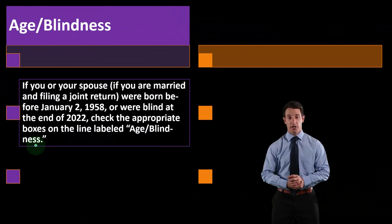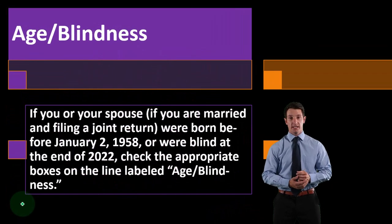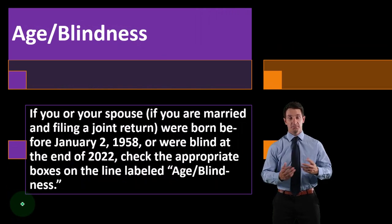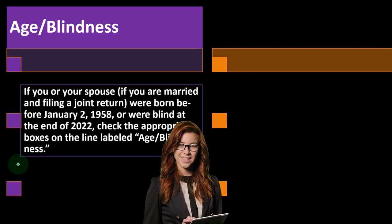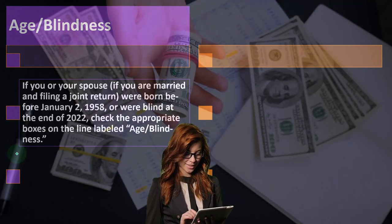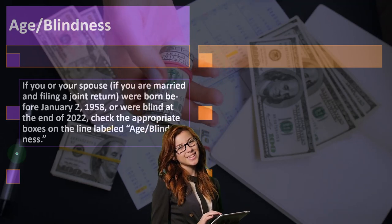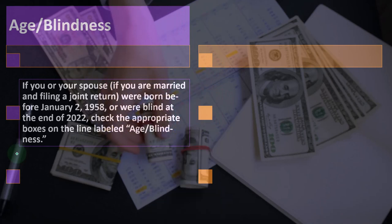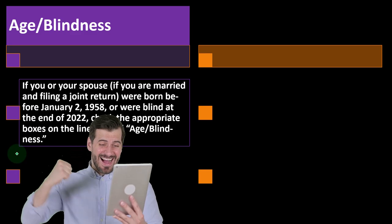Regarding age and blindness: if you or your spouse were born before January 2nd, 1958, or were blind at the end of 2022, check the appropriate boxes on the line labeled age/blindness. The standard deduction will depend on filing status — single, married filing joint, head of household, qualified widow/widower — and you could have an adjustment to those standard deduction amounts based on age or blindness, which could increase those amounts as well.